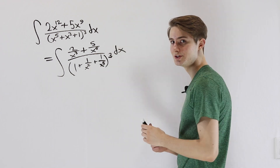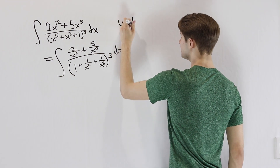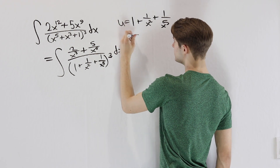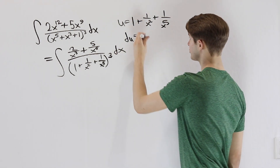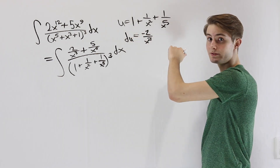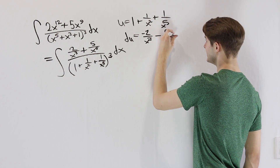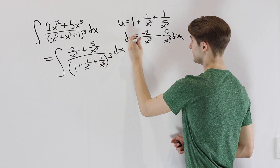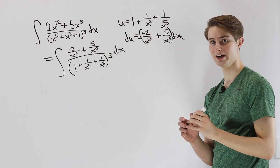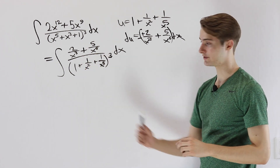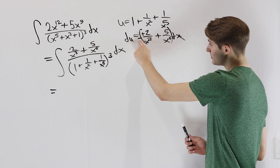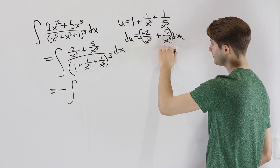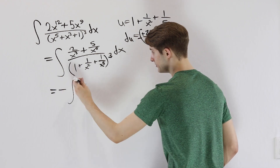Now we try the substitution u = 1 + 1/x² + 1/x⁵. Then du: the constant goes away, the derivative of 1/x² is −2/x³, and the derivative of 1/x⁵ is −5/x⁶. So du = (−2/x³ − 5/x⁶) dx. This is exactly what we have in the numerator — we just need to factor out the negative, giving −(2/x³ + 5/x⁶) dx. Bringing the negative out front means we have a negative sign in front of the integral, and the numerator 2/x³ + 5/x⁶ dx equals −du.